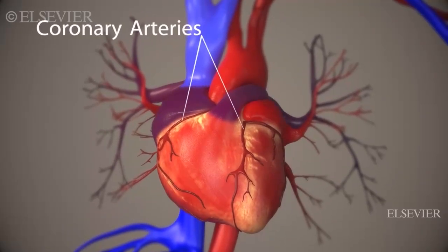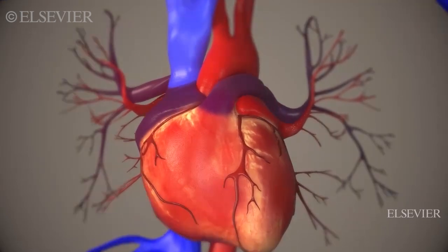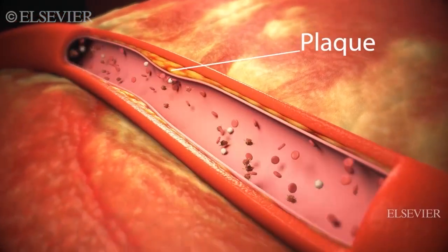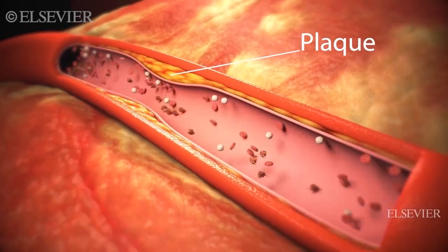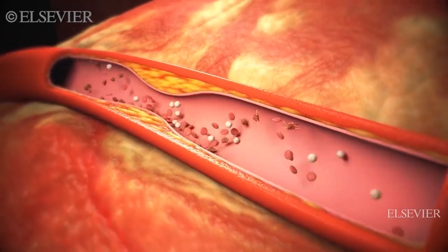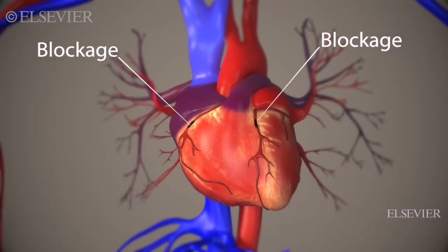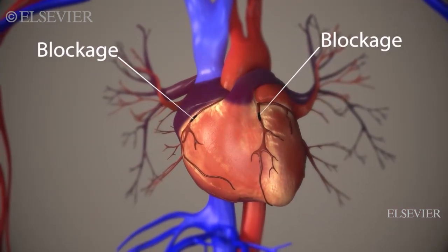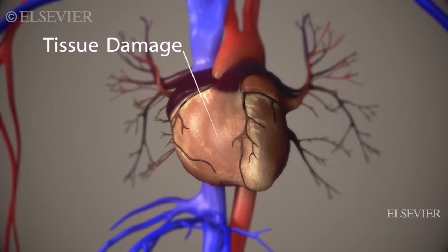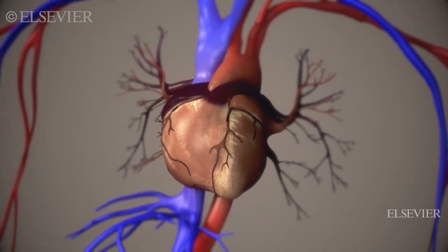Normally the coronary arteries supply blood and oxygen to the heart muscle. In a patient with coronary artery disease, atherosclerotic plaque can build up. If too much plaque accumulates, one or more arteries can become blocked, which can prevent oxygen from reaching the heart. This can cause tissue damage and possibly death.